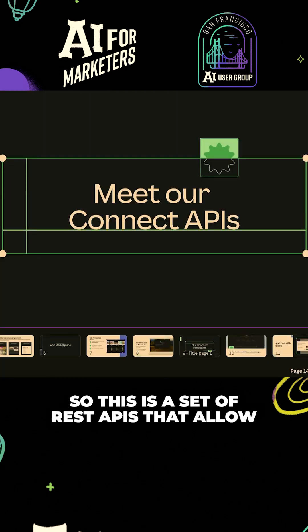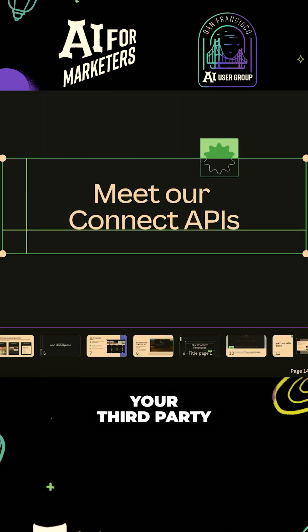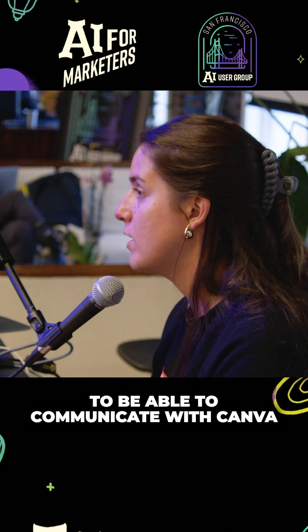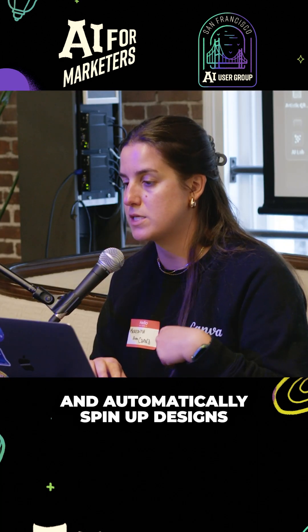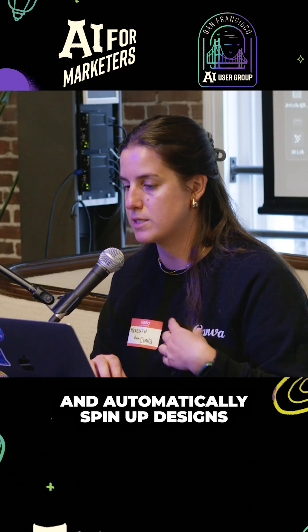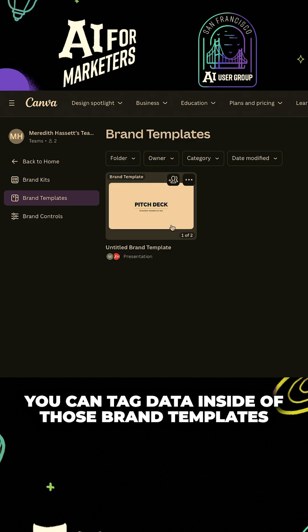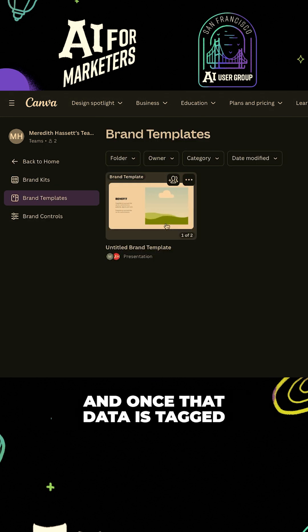This is a set of REST APIs that allow your third party — whether it's your CRM system — to be able to communicate with Canva and automatically spin up designs. When I go to Canva and go to my brand, you can tag data inside of those brand templates.